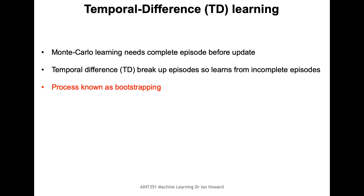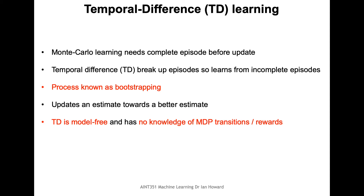Rather than waiting for the actual total gain, TD has an estimate of the gain on each step. This process of using an estimate in order to update is known as bootstrapping. It generates an estimate for each state with every step it takes, and these estimates move progressively towards a better estimate.